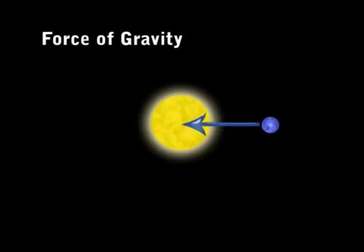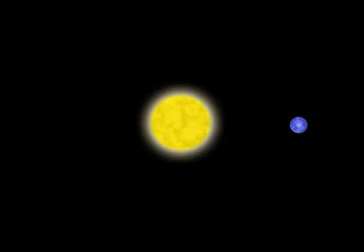The attractive force of gravity keeps the Earth orbiting the Sun, so that it does not float off into space.